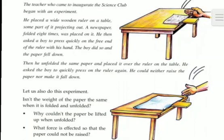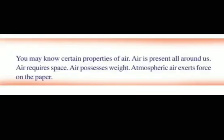Here, the density of air between the table and the paper is reduced, and the outside air pressure exerted on the paper is greater. The air between the table and the paper was very low, so the force exerted by outside air on the paper was high — and due to this force of air, the paper couldn't rise up. So there are many properties of air: air is present all around us, air requires space, air possesses weight, air exerts pressure, and air has no definite shape.